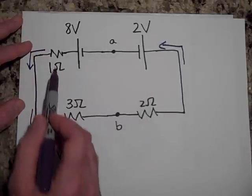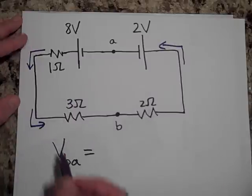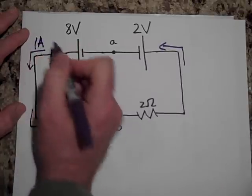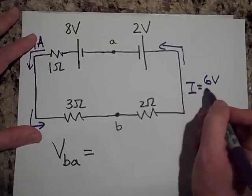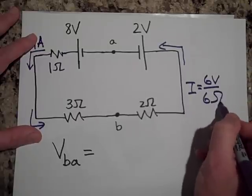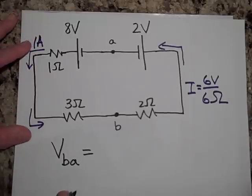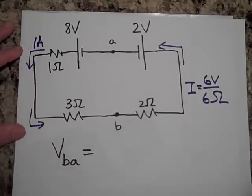6? Yeah, it's 6 and 6, so it's 1 amp. Why? Because the total, the current is going to be the total voltage divided by the total resistance. And so that's 1 amp, 1 amp, 1 amp. Okay.